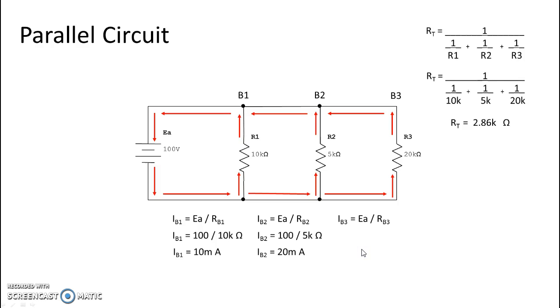And finally, branch three, we take voltage divided by the resistance of branch three, 100 divided by 20k ohms, and we get a current for branch three of 5 milliamps.